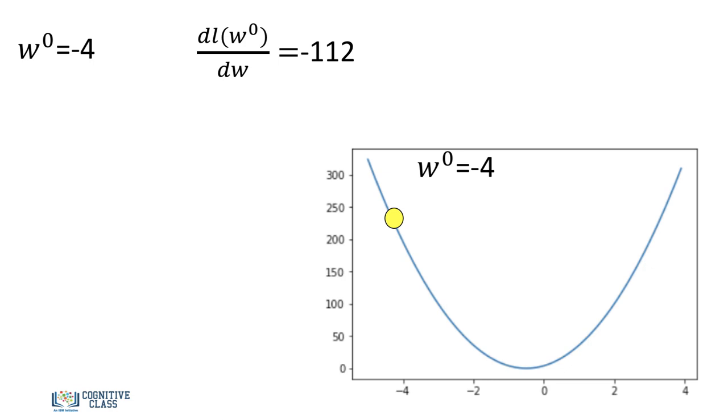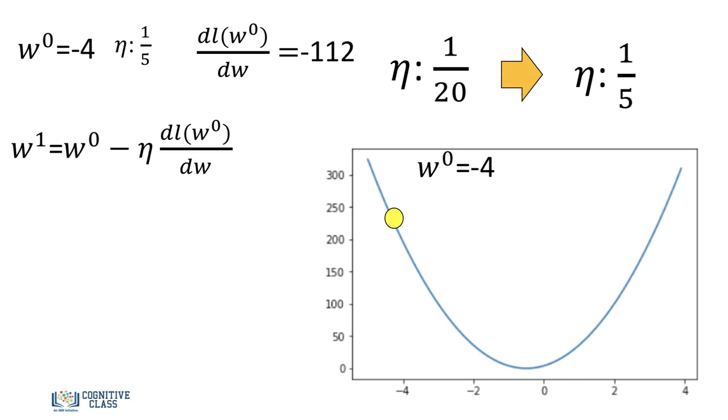One problem of gradient descent is selecting the learning rate. So in the last example, we used a value of 1/20. But let's see what happens when we use a larger value of 1 over 5. Calculating the first iteration, the value of the parameter is 18. This is so large, it won't even fit in our graph. If your learning rate is too big, you'll miss the minimum point.